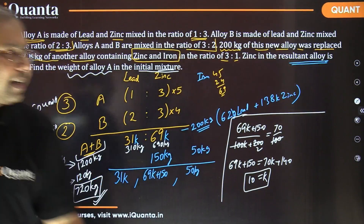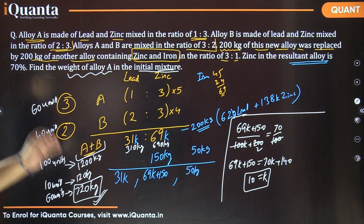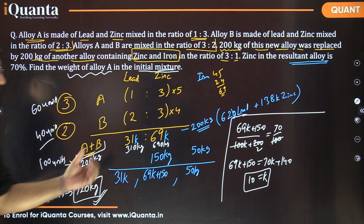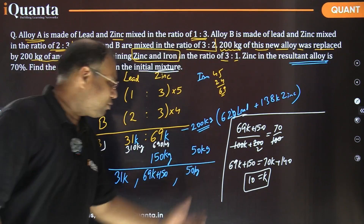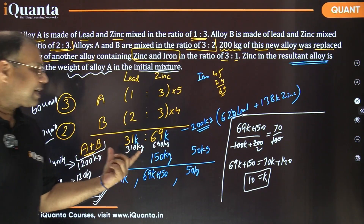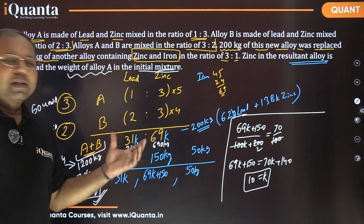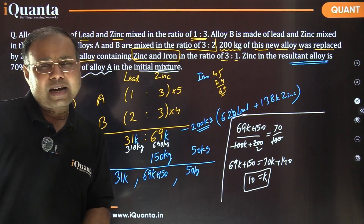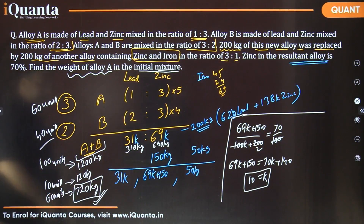As you can see, we haven't used any formula here — no allegation formula at all. We've just gone by simple percentage comparison, simple mixing of things, finding out the ratio, and making use of ratios to find individual values. The important concept is that whenever we take out a certain quantity from a mixture, the component ratio doesn't change — it remains intact. Using all these facts, we reached our final answer. Thank you very much.